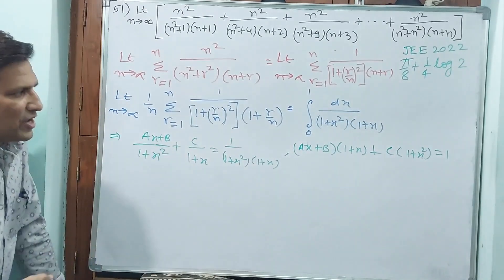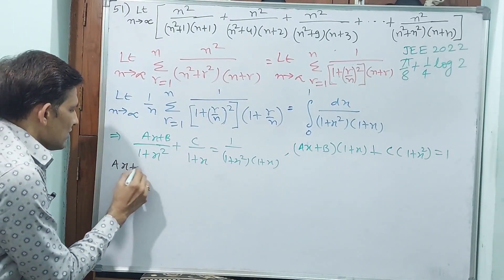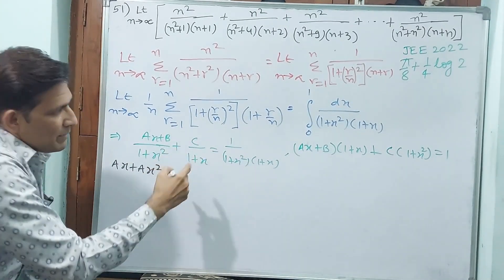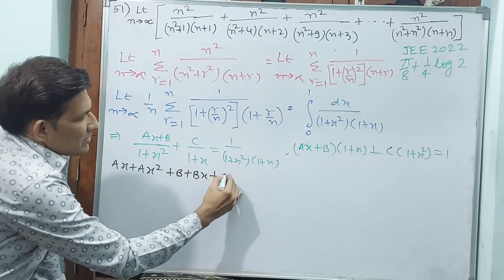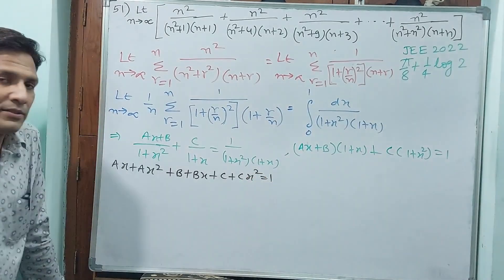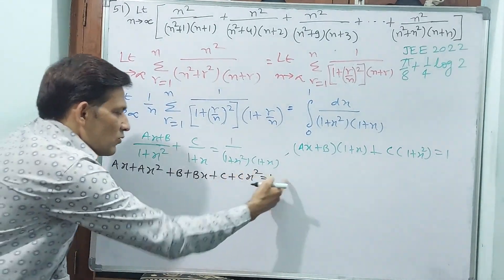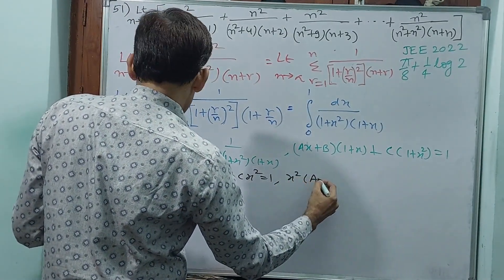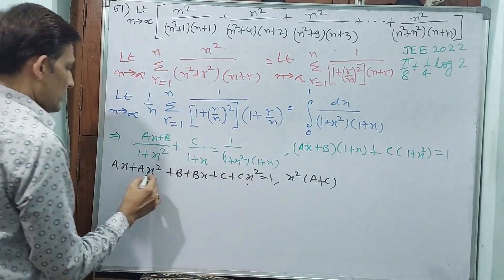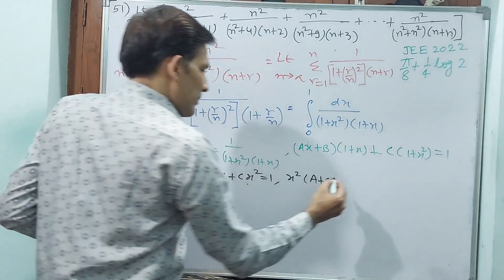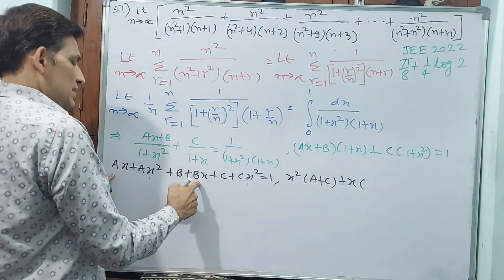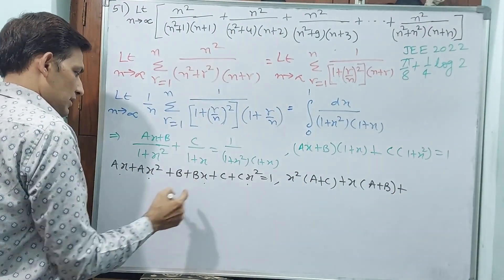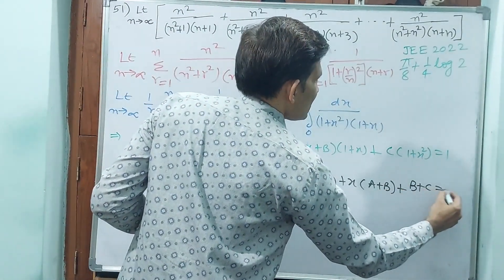Expanding: ax plus ax squared plus bx plus b plus bx squared plus c plus cx squared equals 1. Collecting terms: x squared gives (a plus c), x terms give (a plus b), constant gives (b plus c).